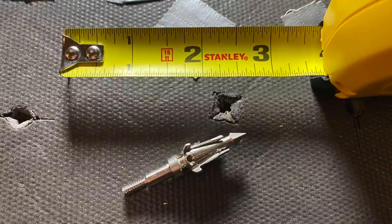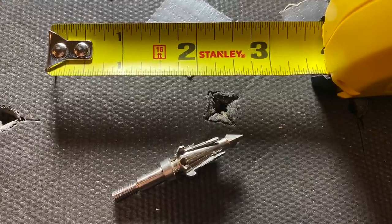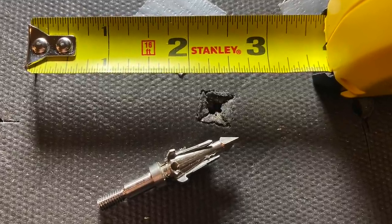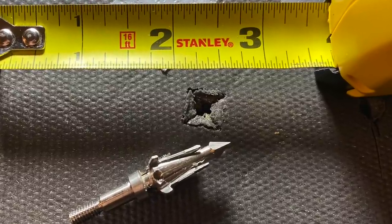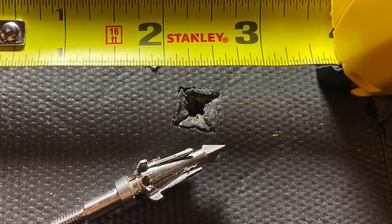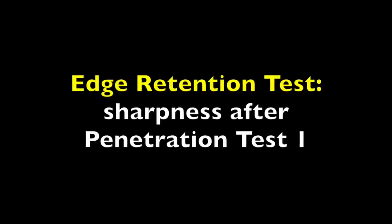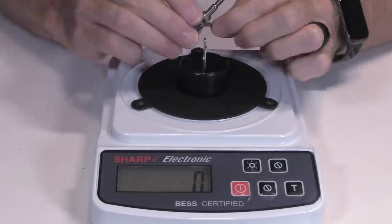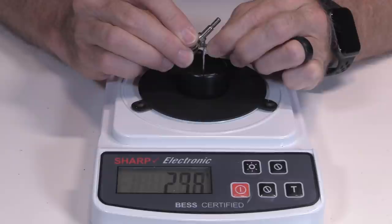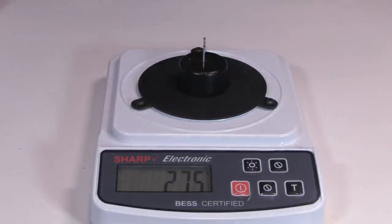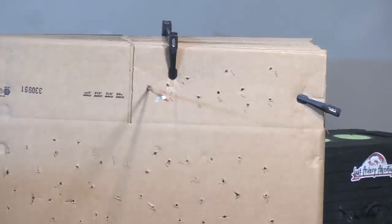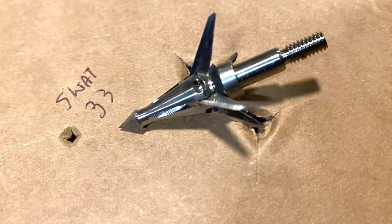Now some broadheads don't open correctly on a soft medium like a rubber foam mat here. So in a case like this I like to do a blade opening test, and I'll do that a bit later. It penetrated through 33 layers.